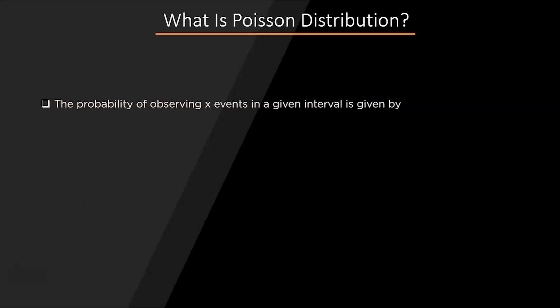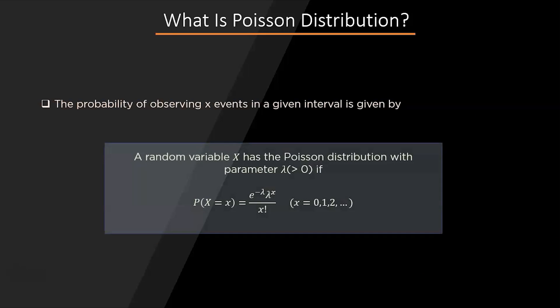The Poisson distribution can be used to calculate how likely it is that something will happen x number of times. A random variable x has a Poisson distribution with parameter lambda, and the formula is: e to the power minus lambda, multiplied by lambda to the power x, divided by x factorial — where x is the number of times the event is happening. The value of e is taken as 2.7182.